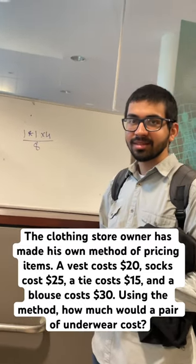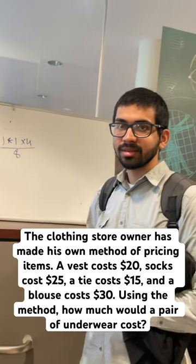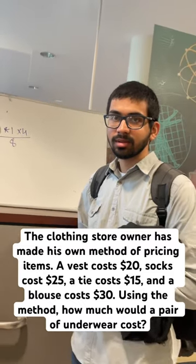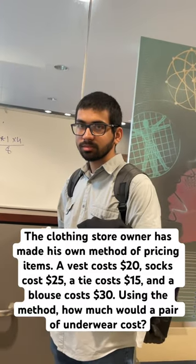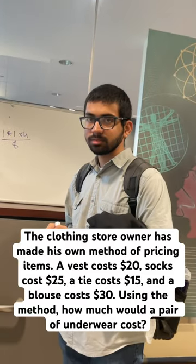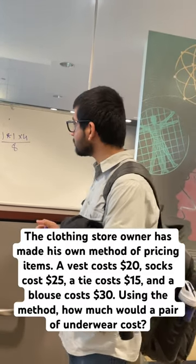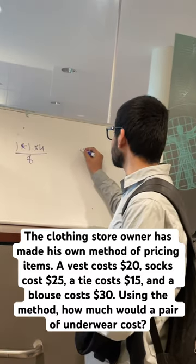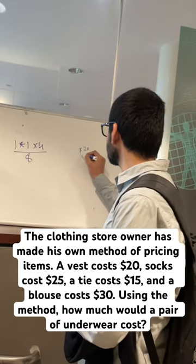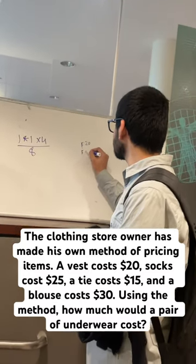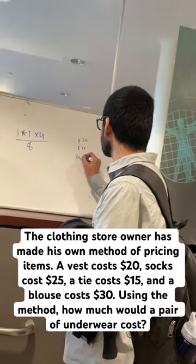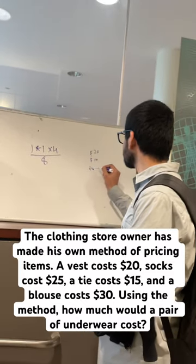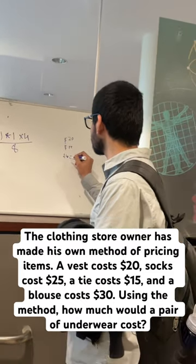The clothing store owner has made his own method of pricing items. A vest costs $20, socks cost $25, a tie costs $15, and a blouse costs $30. Using this method, how much would a pair of underwear cost?